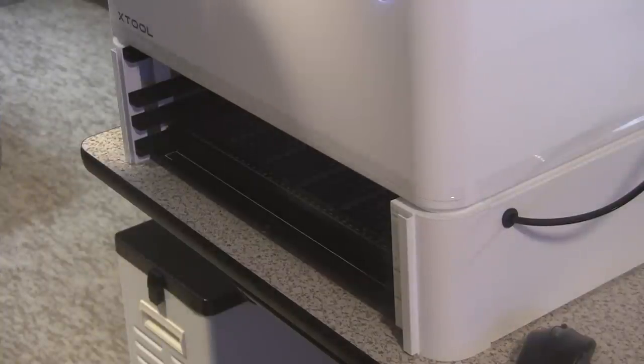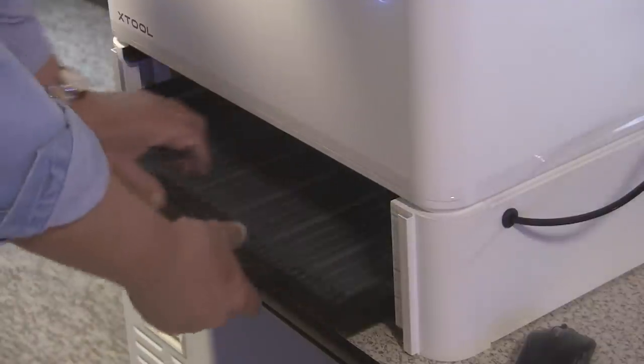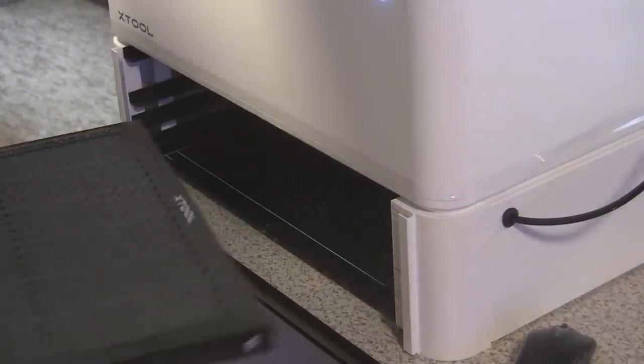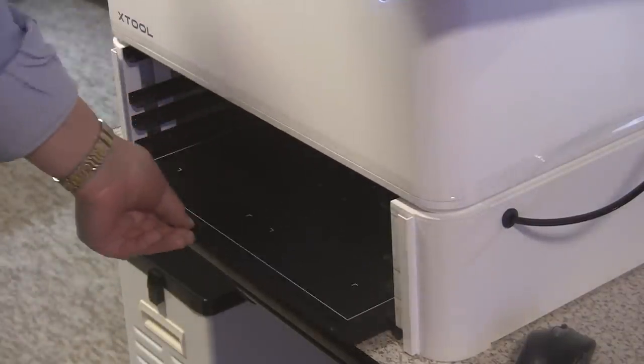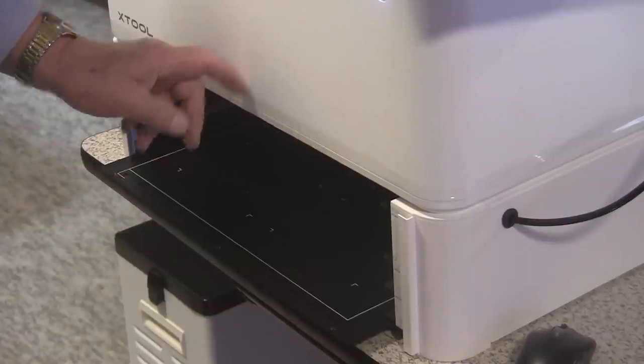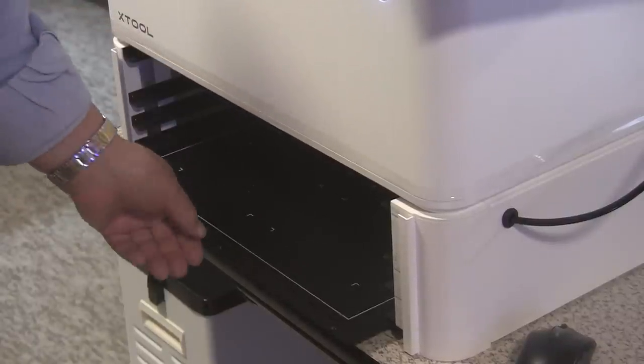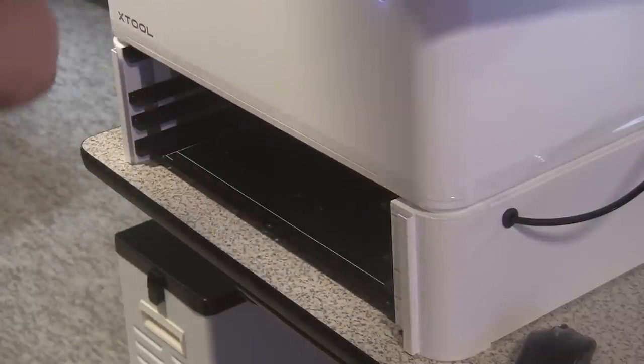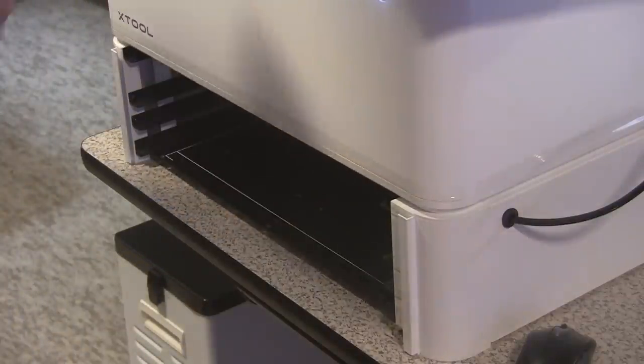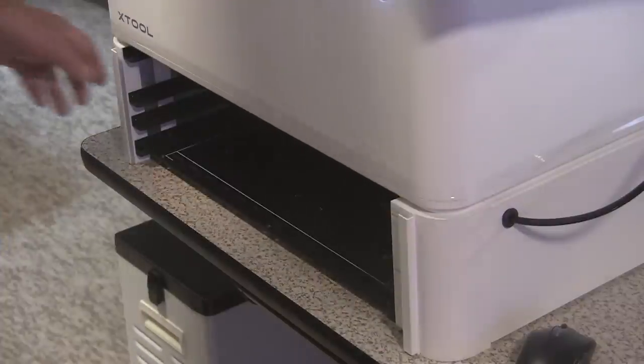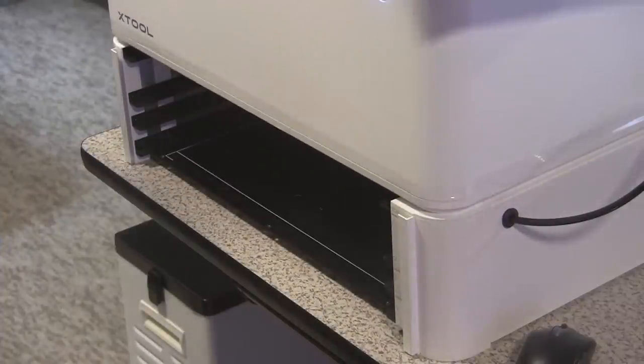With the honeycomb in place at the bottom most level, you could probably do about five and a half inches. Without the honeycomb in place, and with the original base plate which goes inside the machine, but if you were to use it clear down here, then you got about seven and a quarter, seven inches, seven and a quarter, something like that. That's how tall of a piece you could put in there. Which is pretty dang impressive.